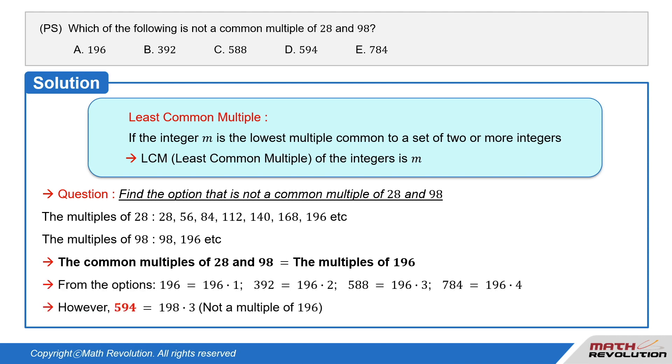Amongst the choices, 196 equals 196 times 1, 392 equals 196 times 2, 588 equals 196 times 3, and 784 equals 196 times 4. While 594 is 198 times 3 and therefore is not a multiple of 196.